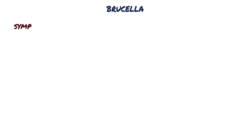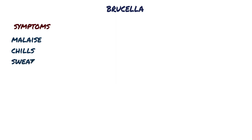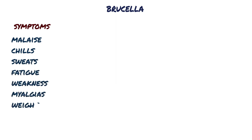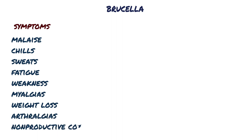Acute disease develops in approximately half of the patients infected with Brucella, with symptoms first appearing typically one to three weeks after exposure. Initial symptoms are nonspecific and consist of malaise, chills, sweats, fatigue, weakness, myalgias, weight loss, arthralgias, and non-productive cough. Almost all patients have fever, and this can be intermittent in untreated patients.